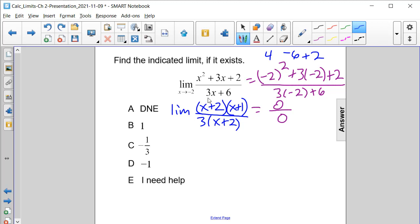And we're finding the limit of this rational function as x is approaching negative 2. Well, we can see that these x plus 2s cancel each other out.